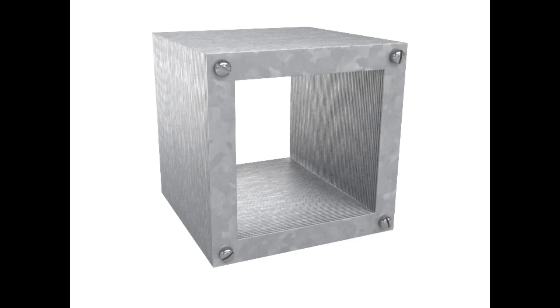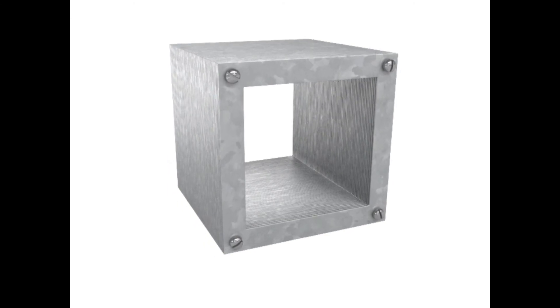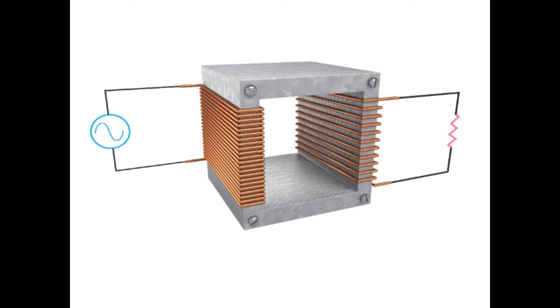Transformers are composed of an iron core ring wrapped in coils. One coil is connected to an AC input voltage and is called the primary coil. The other coil is connected to an output circuit with a load resistance and is called the secondary coil.